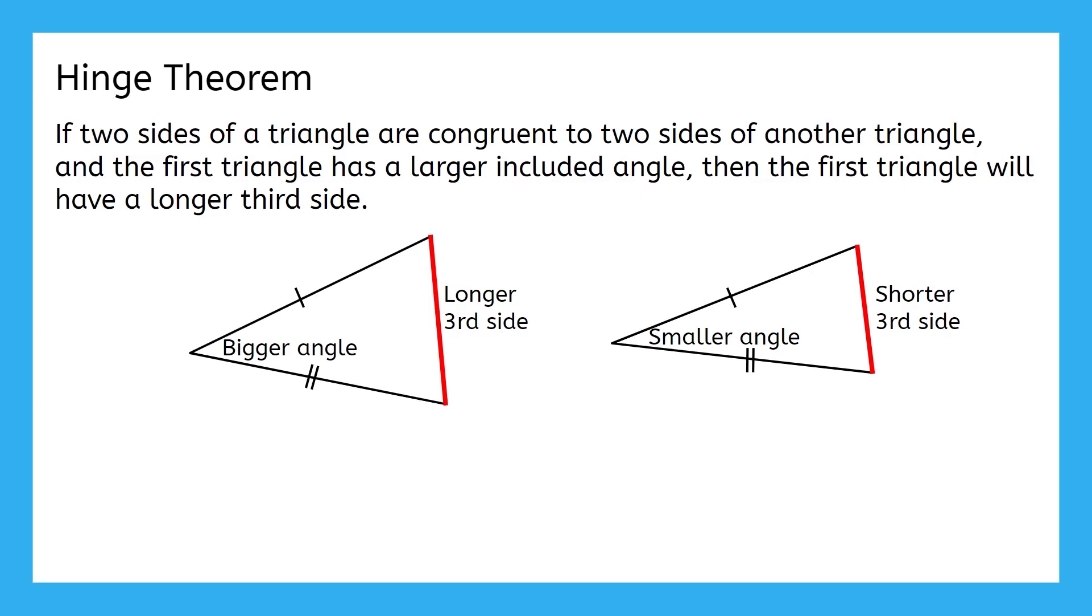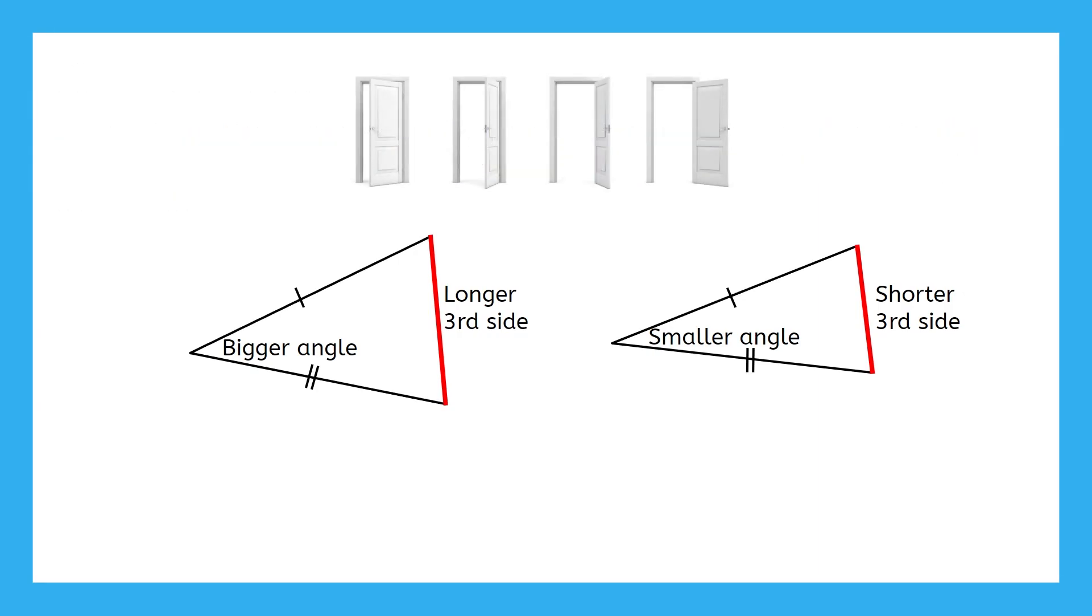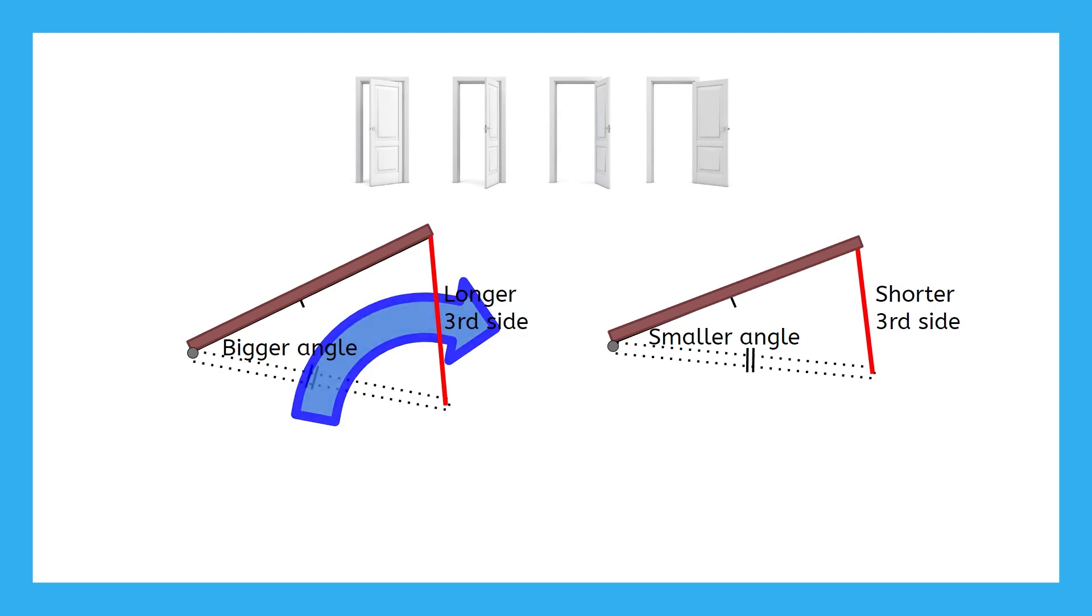Pause the video now to work through the door illustration in your notes. Hopefully you found the door visual as a useful way to help you remember the Hinge Theorem. Let's say that this side of the triangle is the door, and this side is the door frame. They're connected by a hinge. The third side of the triangle is where we would walk through. It would be easier to walk through the doorway with the bigger angle, than it would be to squeeze through the opening with the smaller angle.